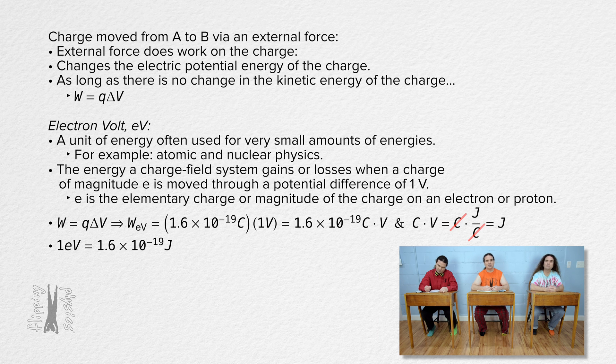So 1 electron volt equals 1.6 times 10 to the negative 19 joules. Great.